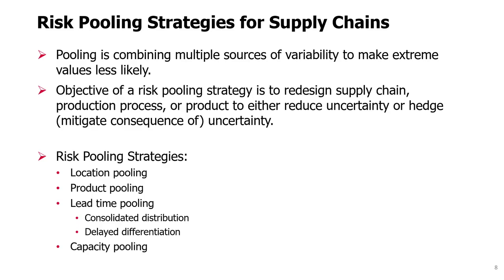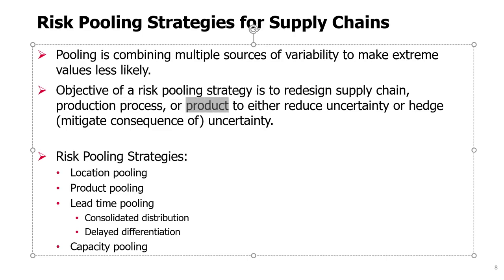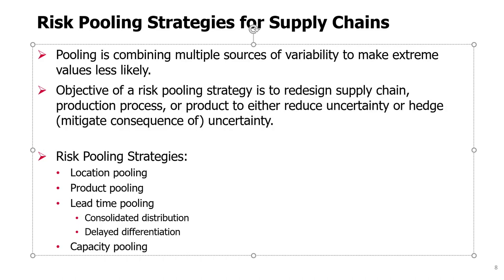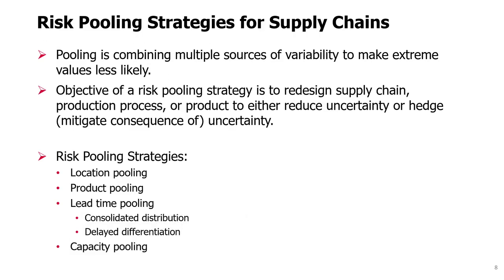In supply chains, the objective of a risk pooling strategy is to redesign either a supply chain, a production process, or a product that the supply chain is delivering, in order to reduce uncertainty or hedge or mitigate the consequences of uncertainty. You will see the following risk pooling strategies in this topic: location pooling, product pooling, and two types of lead time pooling — consolidated distribution and delayed differentiation — and finally, production capacity pooling.